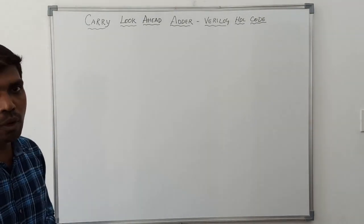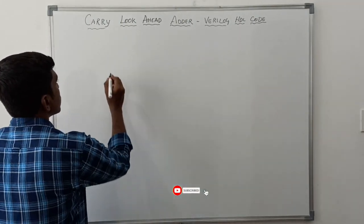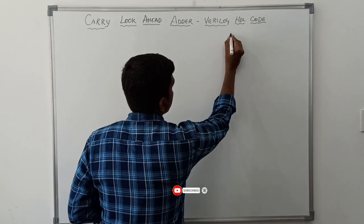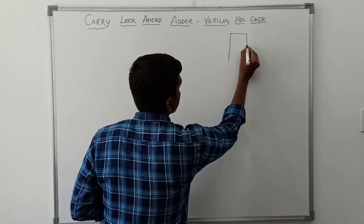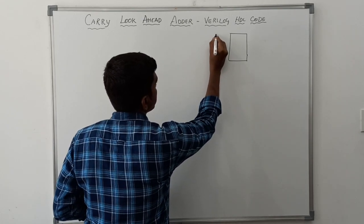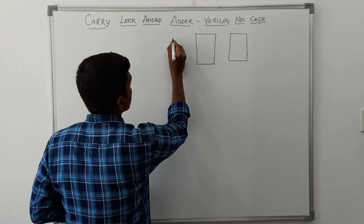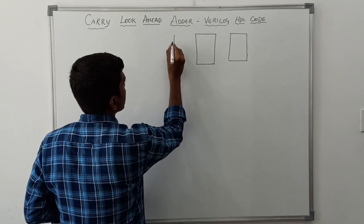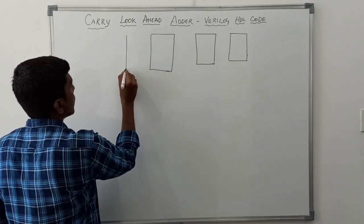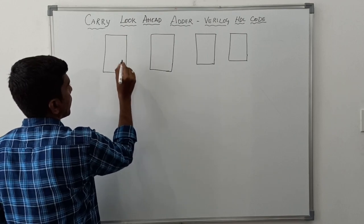Now I will draw the block diagram of carry lookahead adder. It is a 4-bit carry lookahead adder. I draw four 1-bit adder circuits — the 1st, 2nd, 3rd, and 4th adder.